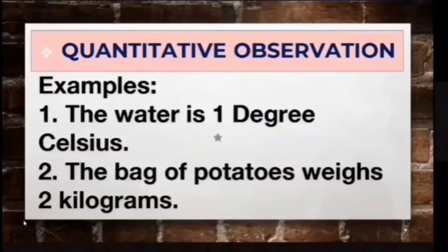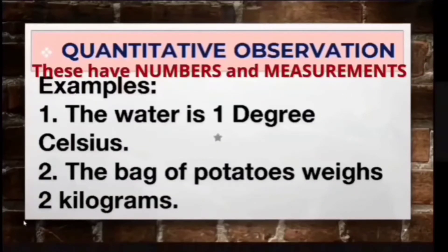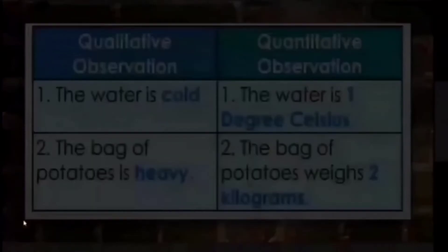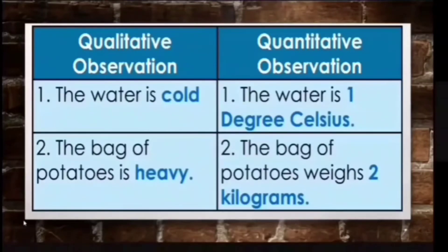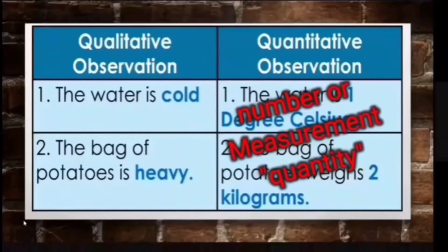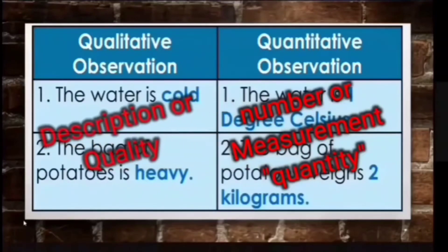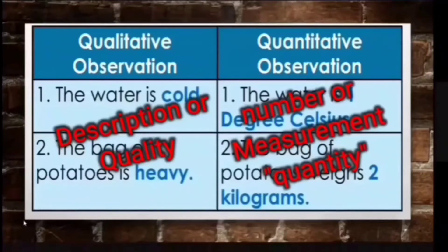Examples of quantitative observation are: the water is 1 degree Celsius, and the bag of potatoes weighs 2 kilograms. These are quantitative because the sentences contain numbers and measurements. Comparing both types: qualitative observation describes the quality of an object (e.g., cold, heavy), while quantitative gives a measurement. Remember — if an observation gives you a number or measurement, it is quantitative; if it gives you the description or quality of an object, it is qualitative.